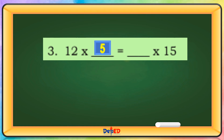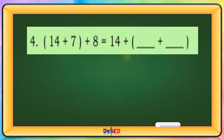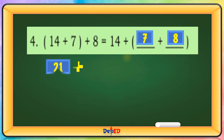Our missing terms are 5 and 4. 12 times 5 equals 16, and 4 times 15 equals 60. 14 plus 7 plus 8 — our missing terms are 7 and 8. 14 plus 7 equals 21, plus 8. 21 plus 8 equals 29.